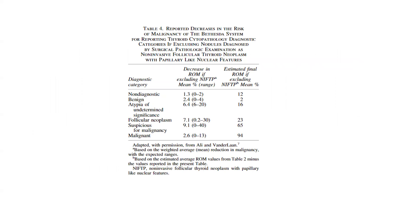Table four reports the decrease in risk of malignancy of the Bethesda system when excluding nodules diagnosed by surgical pathological examination as NIFTP. There is a decrease in risk of malignancy when excluding NIFTP: non-diagnostic comes down to 1.3%, benign to 2.4%, AUS to 6.4%, follicular neoplasm to 7.1% mean, suspicious for malignancy to 9.1%, and malignant to 2.6%. The estimated final risk of malignancy excluding NIFTP is 12% for non-diagnostic, 2% for benign, 16% for AUS, 23% for follicular neoplasm, 65% for suspicious for malignancy, and 94% for malignant.